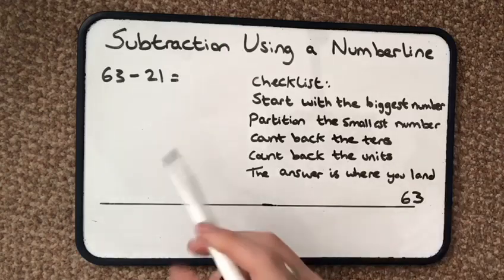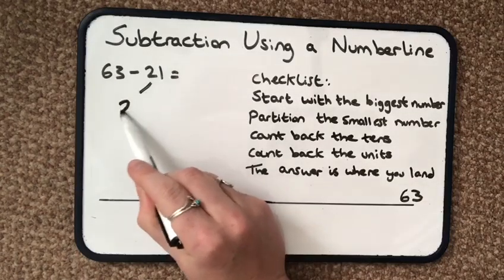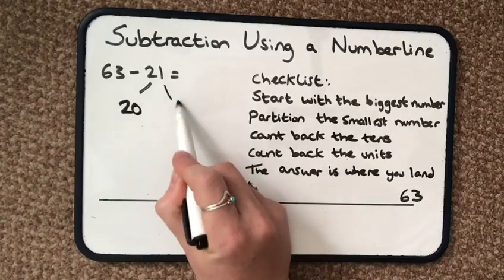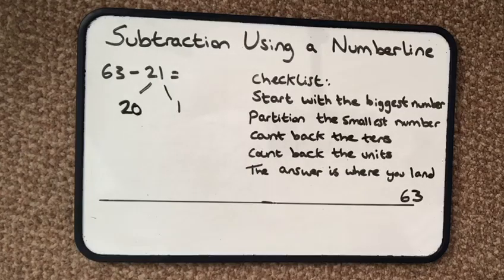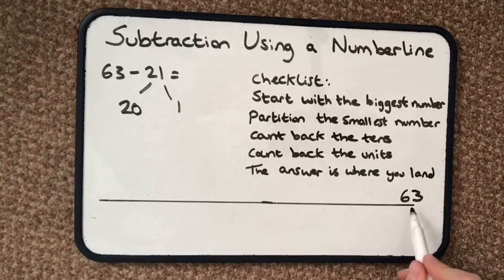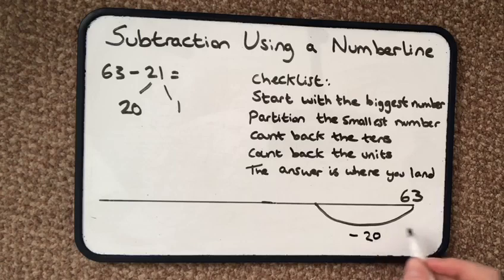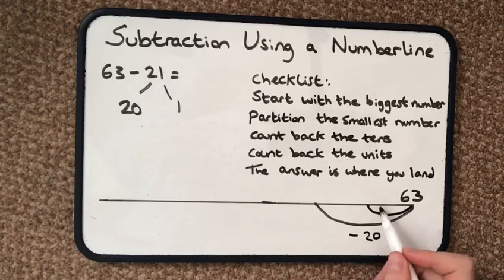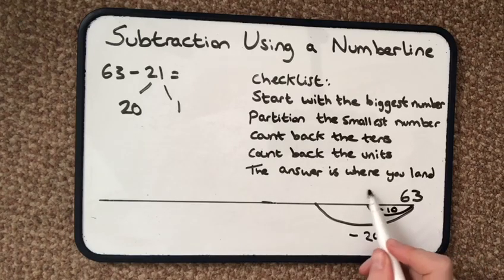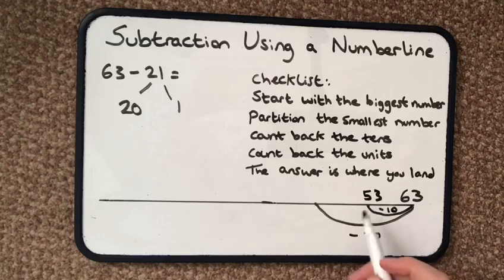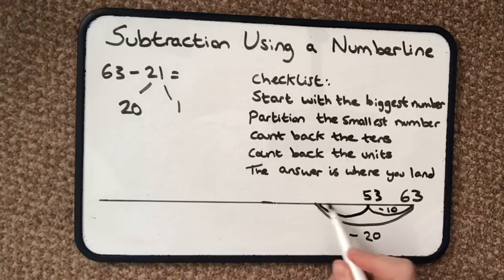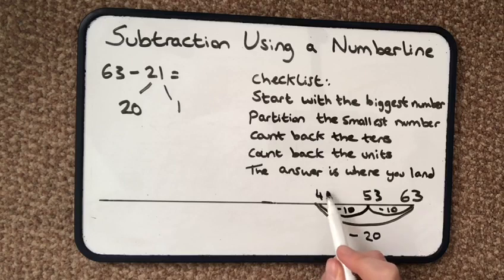Then I'm going to partition — that just means break up the smallest number into its tens and its ones. Then I count back the tens. So I can either do a big jump of 20, or if I don't know how to do that, I can do a little jump of 10 and note where I land on the number line, and then another little jump of 10 and note where I land on the number line.